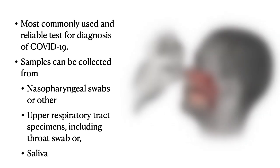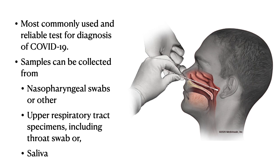The sample can be collected from the nasopharynx by putting a swab through the nasal orifice, or through the oral route from the oropharyngeal mucosa. If the patient is intubated, we can put in a catheter and take an endotracheal aspirate; if the patient is not intubated, we can ask the patient to cough and examine the sputum.